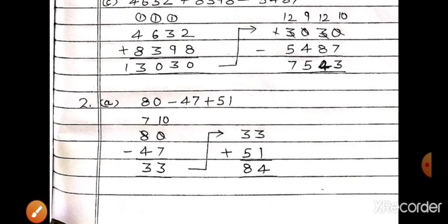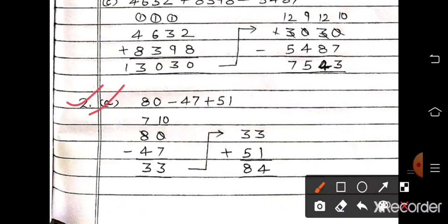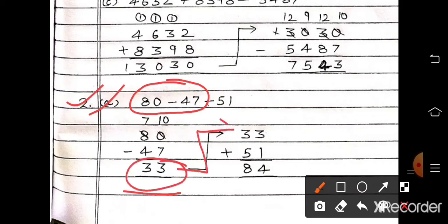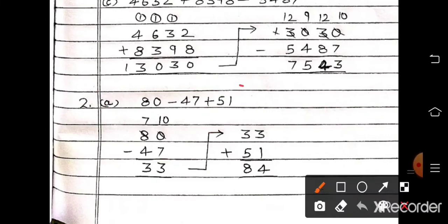So like this you have to do. Question number 2, part A: 80 minus 47 plus 51. First we subtract: 80 minus 47. Write it, take borrow — the answer will be 33. Now write 33 here and add 51. So 33 plus 51: 3 plus 1 is 4, 3 plus 5 is 8. The answer will be 84.